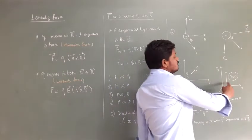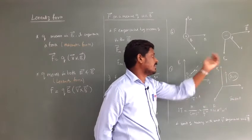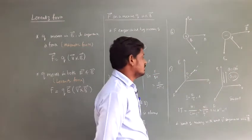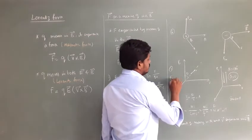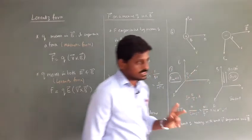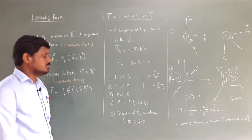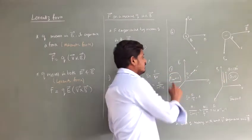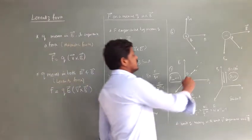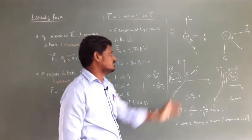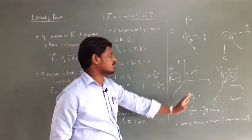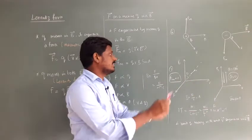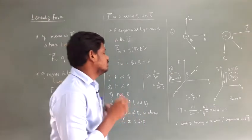If a charge moves parallel or anti-parallel to the magnetic field, θ = 0° or θ = 180°, so sin 0° = 0 and sin 180° = 0, giving magnetic force = 0. There are two conditions where the magnetic force is zero: first, if the charge is at rest in the magnetic field; second, if the charge moves with a velocity that is parallel or anti-parallel to the magnetic field. If a particle moves at some angle with the magnetic field, it experiences a magnetic force perpendicular to both — for a positive charge the force is inward, for a negative charge it is outside the board. These are the seven points they may ask in three marks.